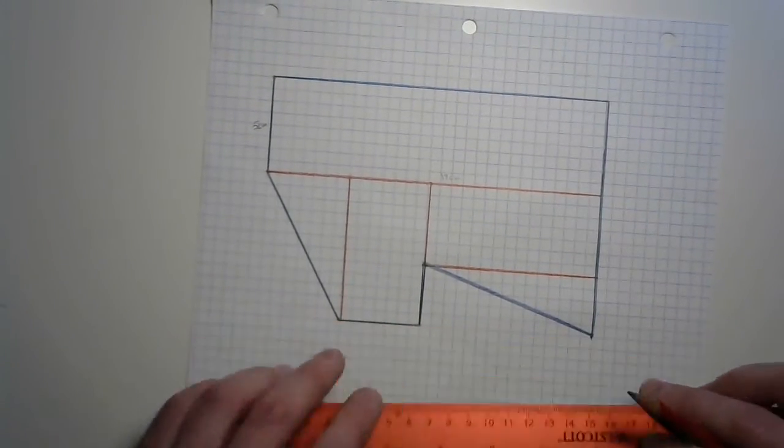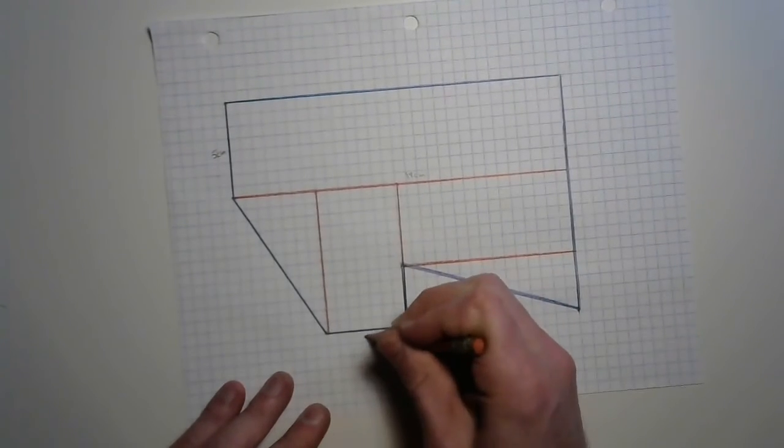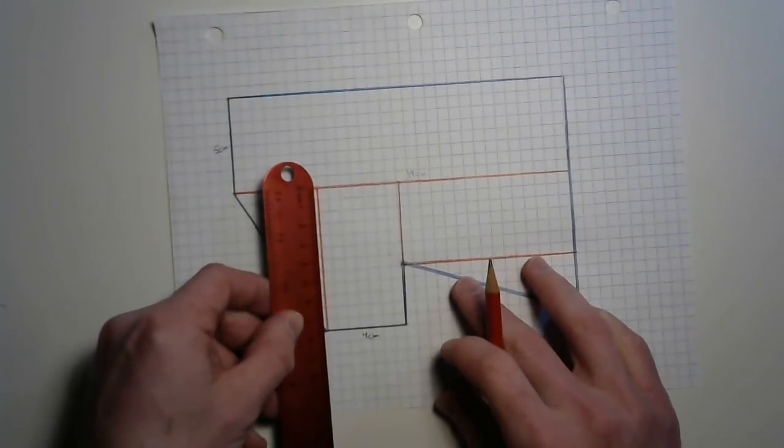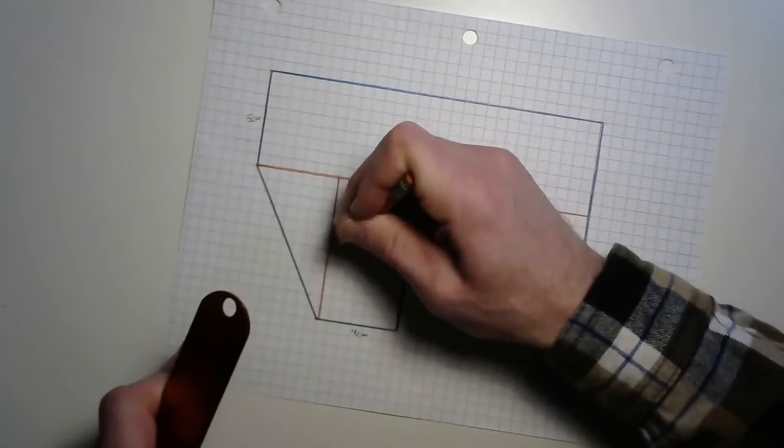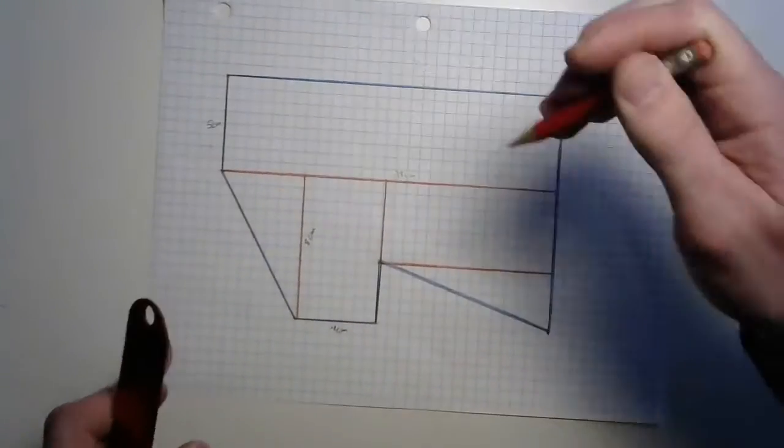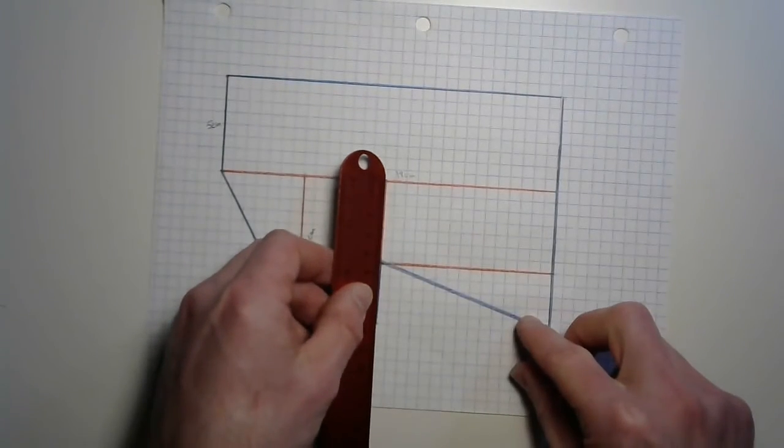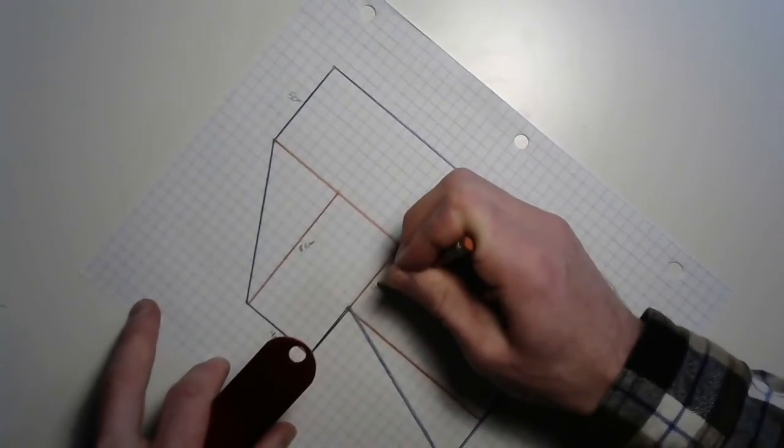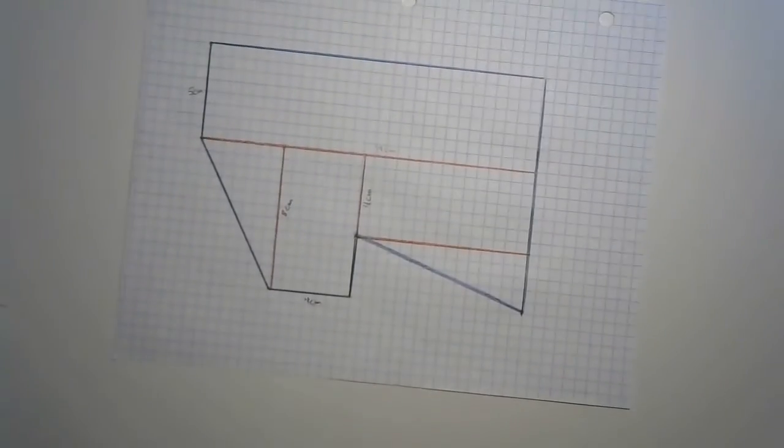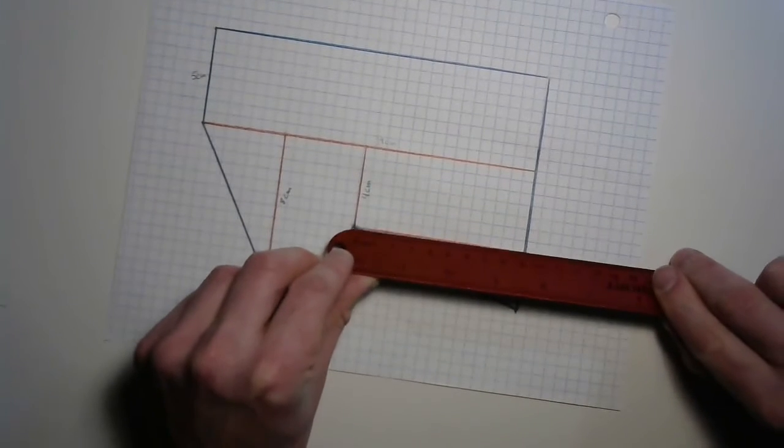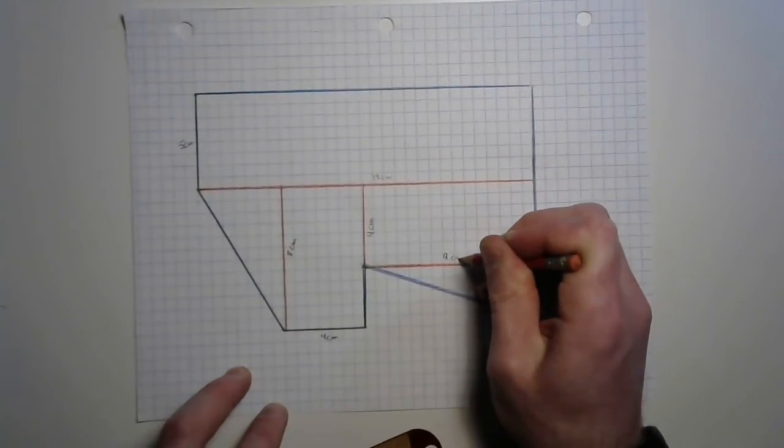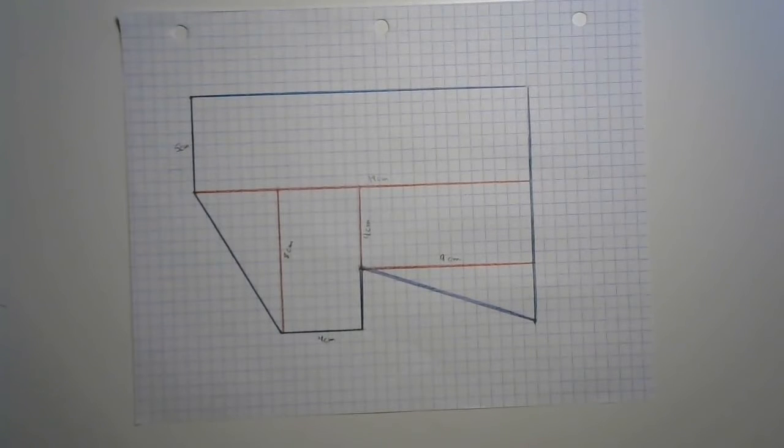And then how about this rectangle here? We've got 4 centimeters down here. And how about its height? 8 centimeters. That's where that 8 centimeters was. And this other rectangle, we're looking at about 4 centimeters and 9 centimeters.